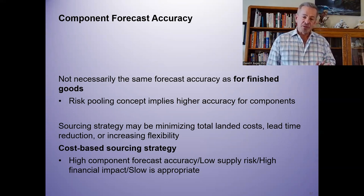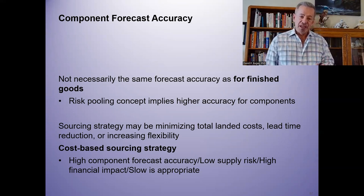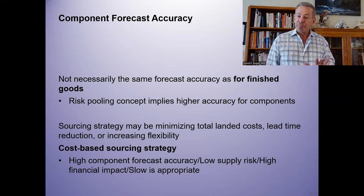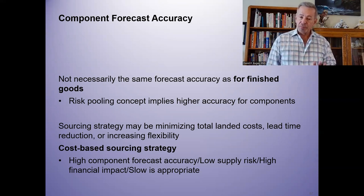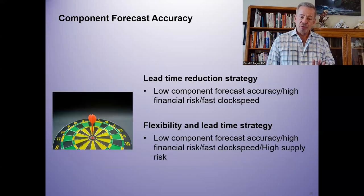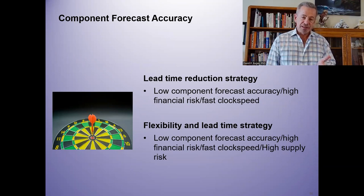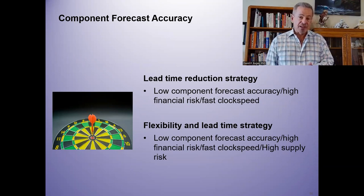On cost-based sourcing strategy, you really want to have a high component forecast accuracy for low supply risk. Think about the corners of our four quadrants — low supply risk with high financial impact — and a slow strategy is always appropriate. Have a lead time reduction strategy, trying to reduce the lead time in the process to get faster to your client.